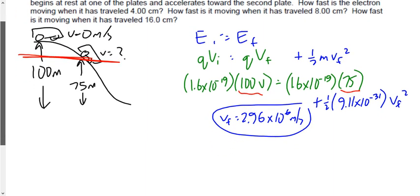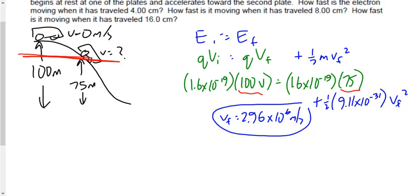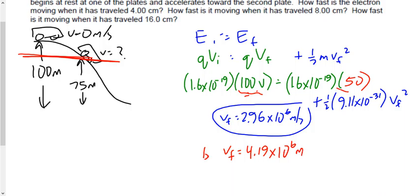For part B, the electron has traveled 8 centimeters across the 16-centimeter gap — that's 50%, halfway. So the initial potential is 100 and the final potential is 50, a difference of 50 volts. Running the same energy conservation calculation, we end up with 4.19×10⁶ meters per second — again in the range of 10⁵ to 10⁶, and faster than part A, as expected since the further you go down the hill, the faster you'll be moving.